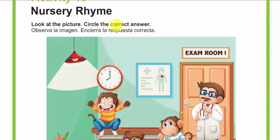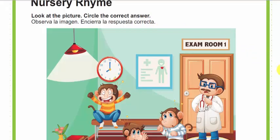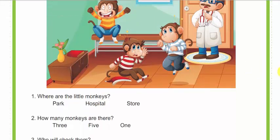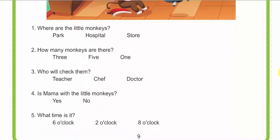So we start with activity number 10: Nursery Rhyme. Look at the picture, circle the correct answer. Comenzamos con la actividad número 10. Vamos a mirar la imagen y vamos a circular la respuesta correcta. As you can see, we have three monkeys that are with a doctor.